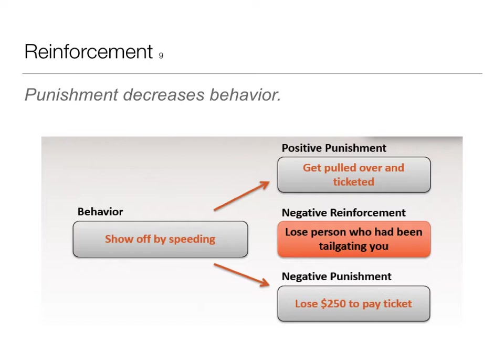Here's another example: you're showing off by speeding in your car. A positive punishment would be getting pulled over and getting a ticket — being pulled over, waiting for the police officer — all of that feels uncomfortable; something bad has been added. A negative punishment would be losing $250 to pay the ticket — something desirable has been taken away. In this situation, you might also experience negative reinforcement if you got away from someone who was tailgating you — that adverse situation was removed.